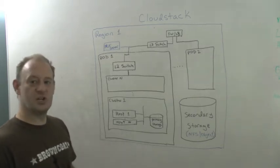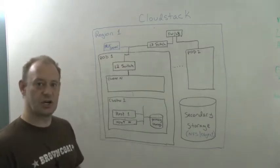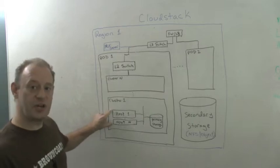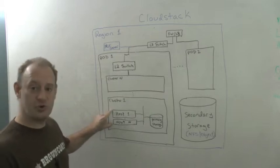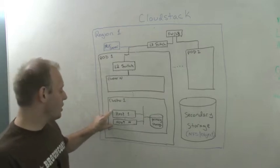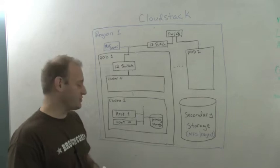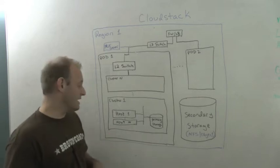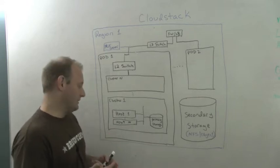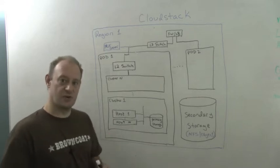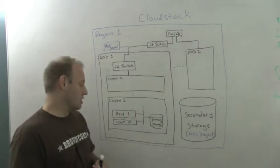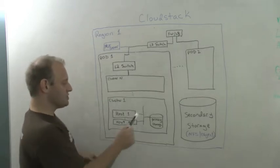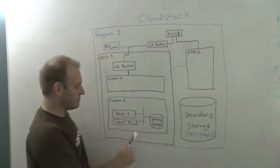What we're going to do is break down the logical architecture, and what we really want to start with here is your host. So what is a host? A host can be a bare metal server, or it can be a server containing a hypervisor — could be Xen Server, could be KVM, could be vSphere.